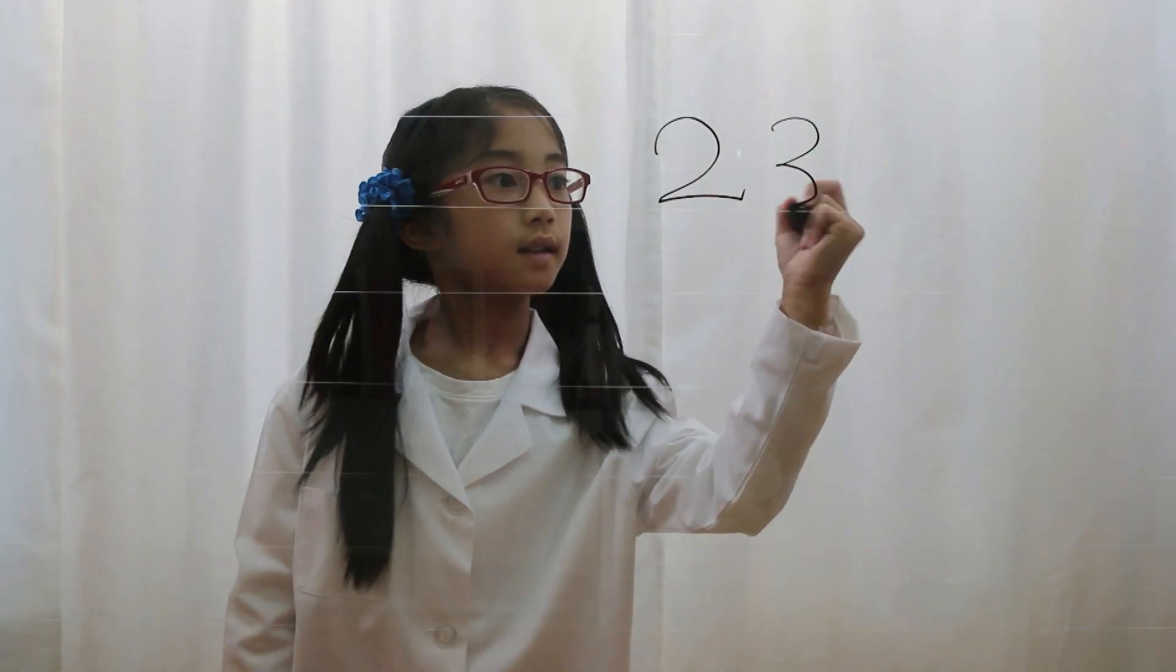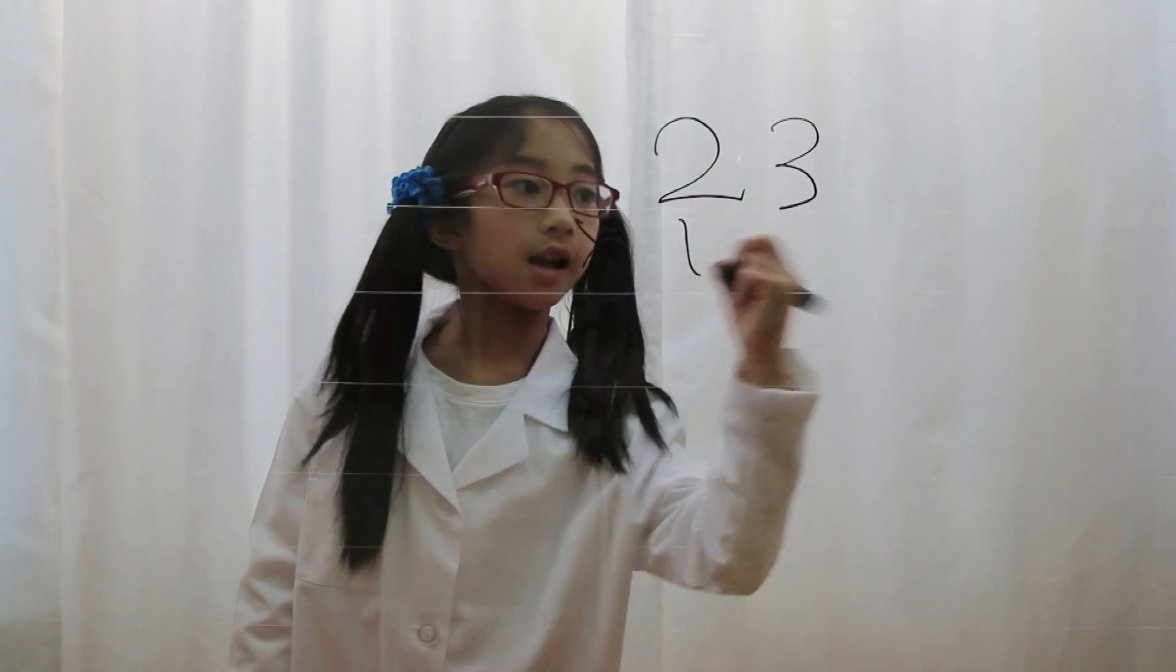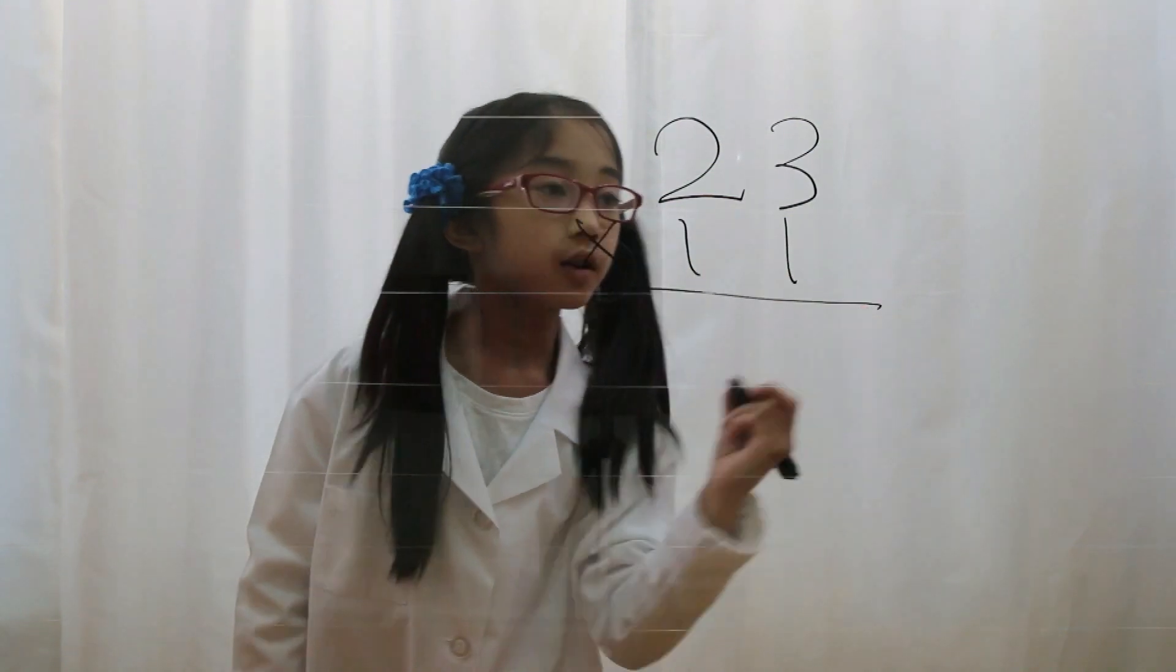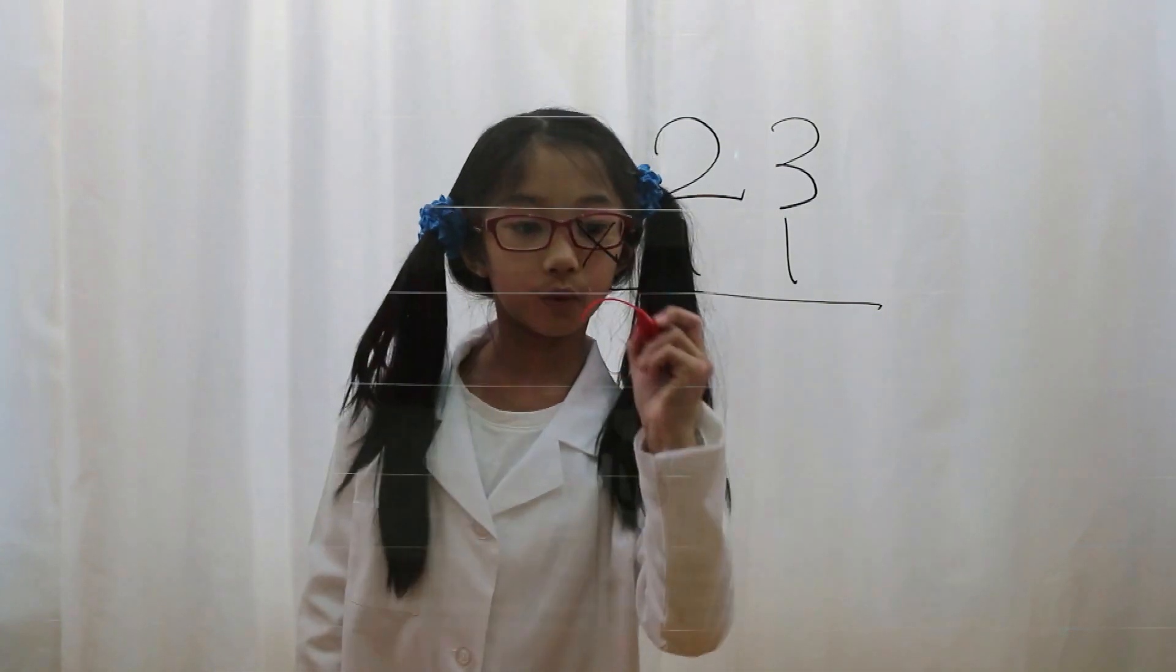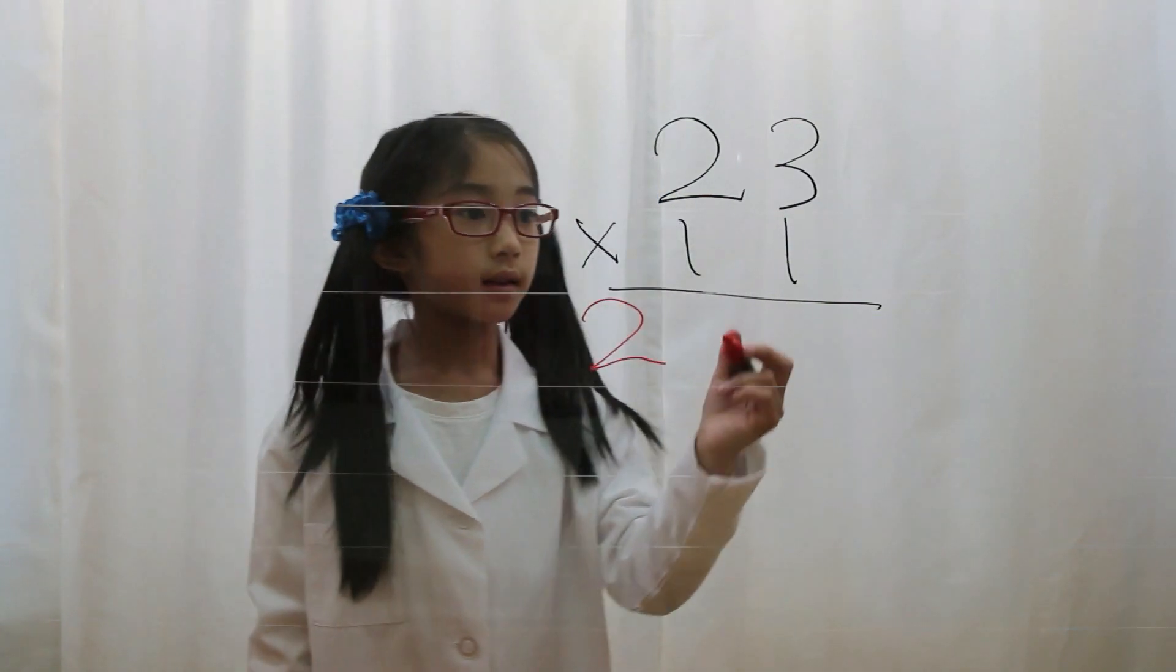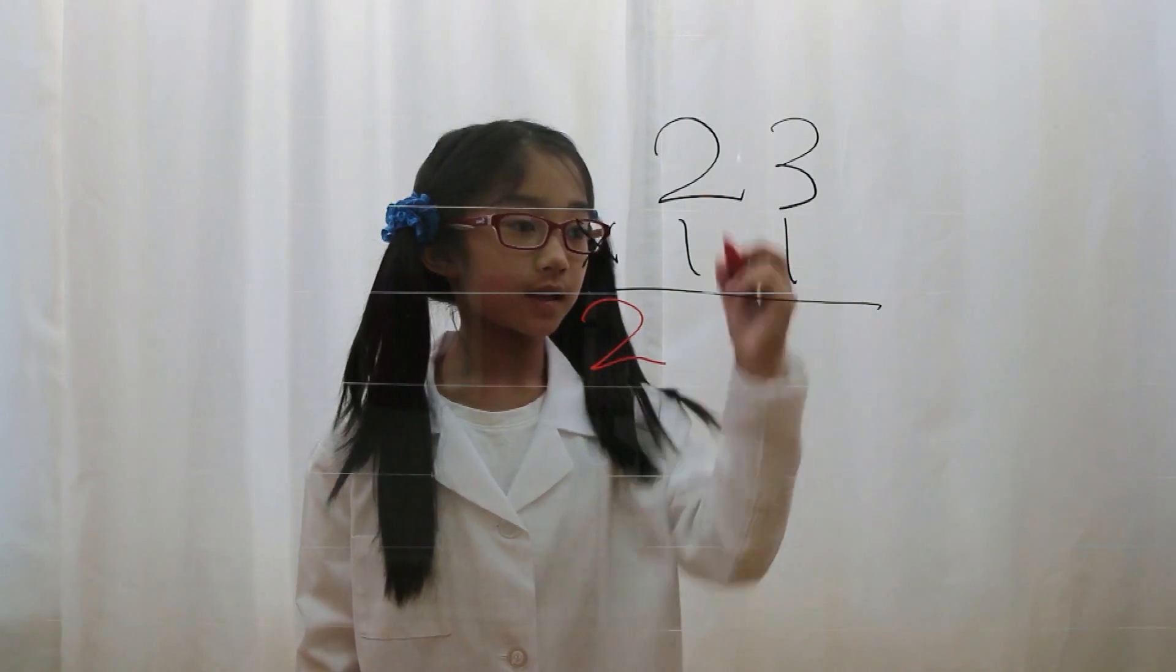Let's say you have 23 times 11. You look at the 23 and you write the first digit down, which is 2. And then you write the second digit down, which is 3.